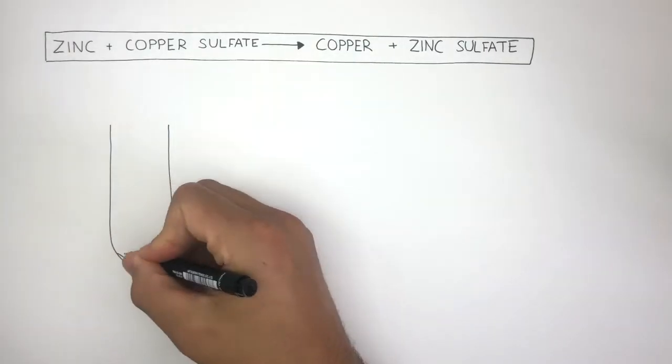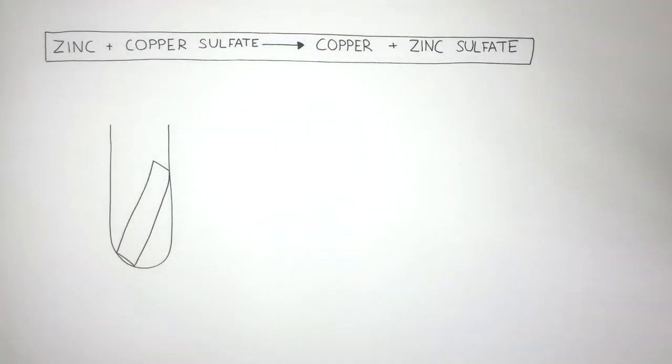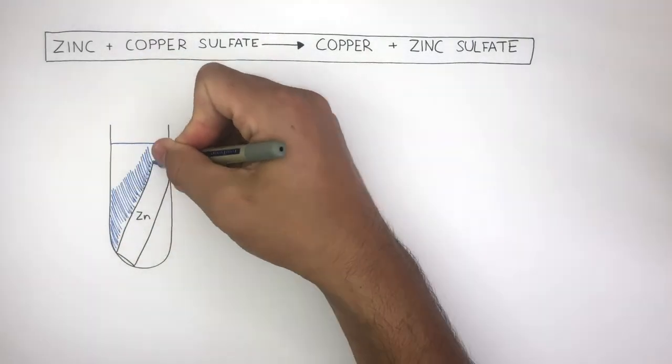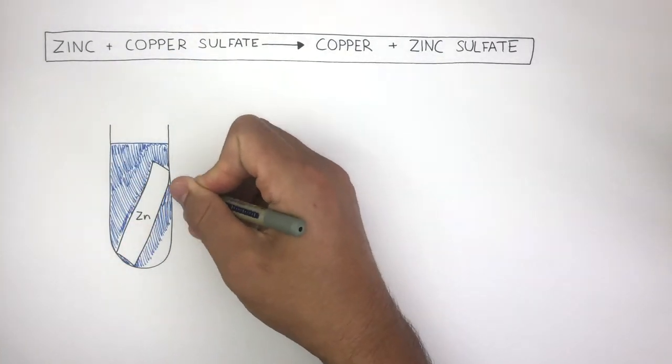In this chemical reaction, we have a test tube and we place the zinc inside of the test tube. I'm writing Zn because this represents the zinc metal. And then we pour the blue copper sulfate solution into the test tube.